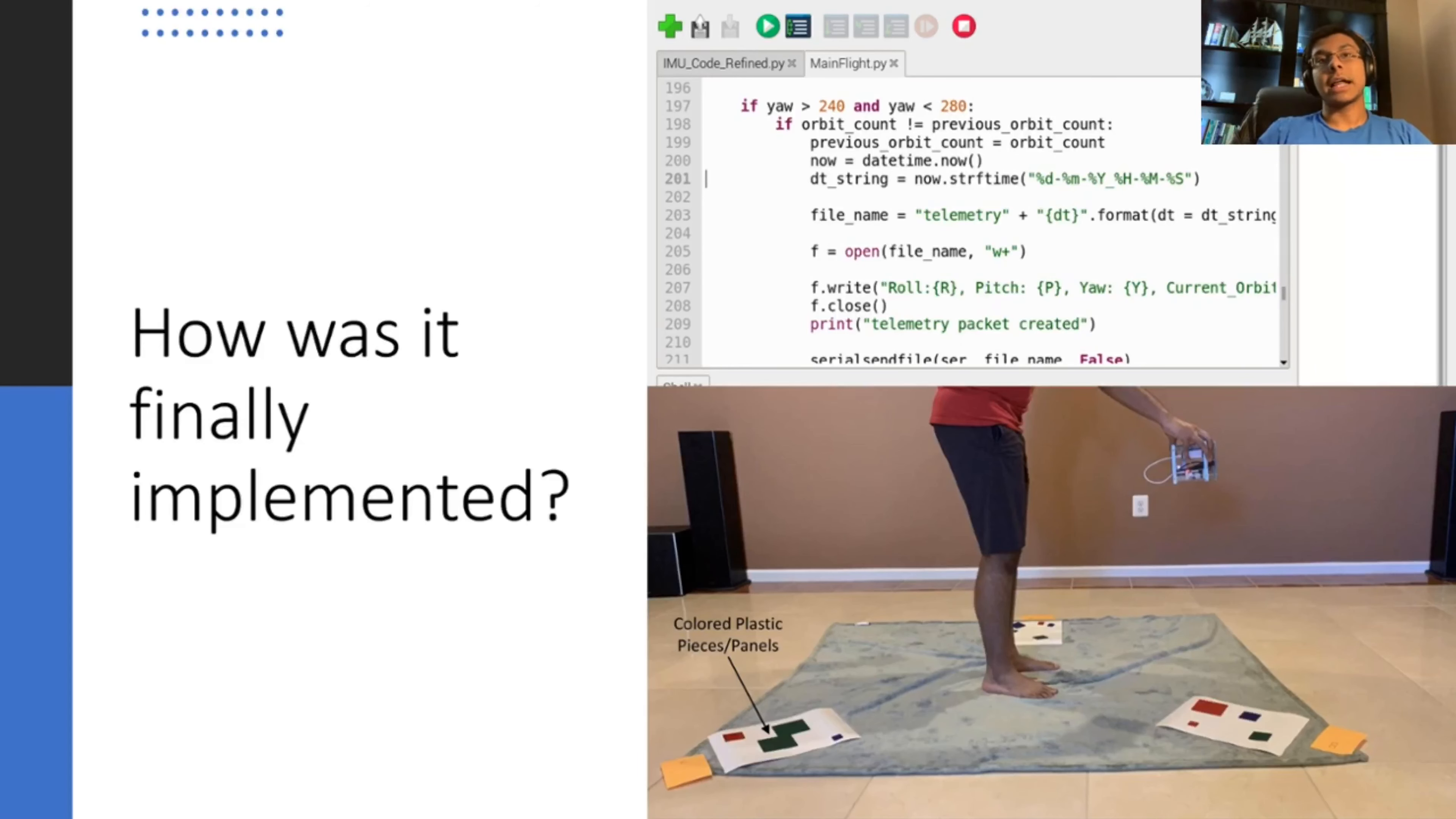Secondly, the calibrated IMU values were used to correctly execute the automatic capture of images of the poster board, which has the plastics on it, at the correct position. This means that the CubeSat would continuously read values from the IMU as it's going in its orbit, until it reads that it's directly above a poster board, before automatically capturing an image. This precise image capture sequence would be crucial for later image processing sequences.